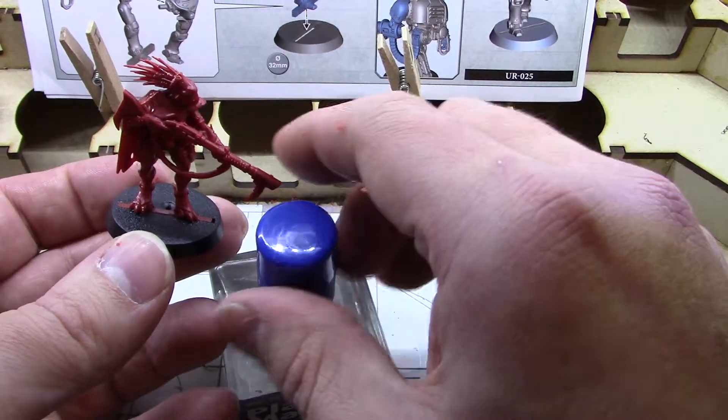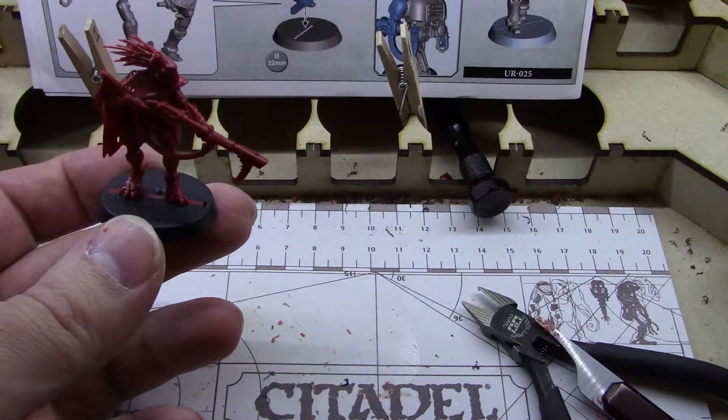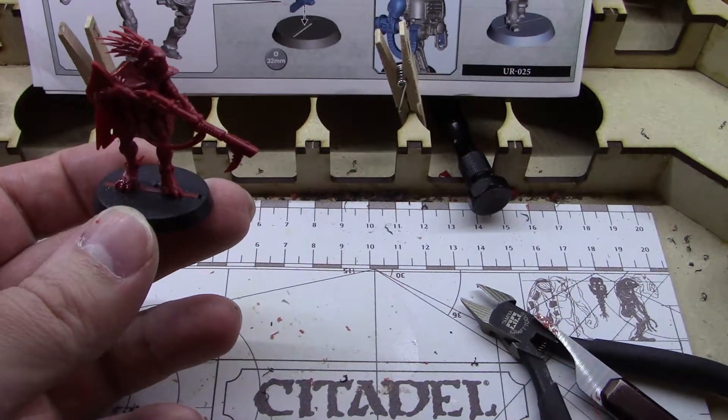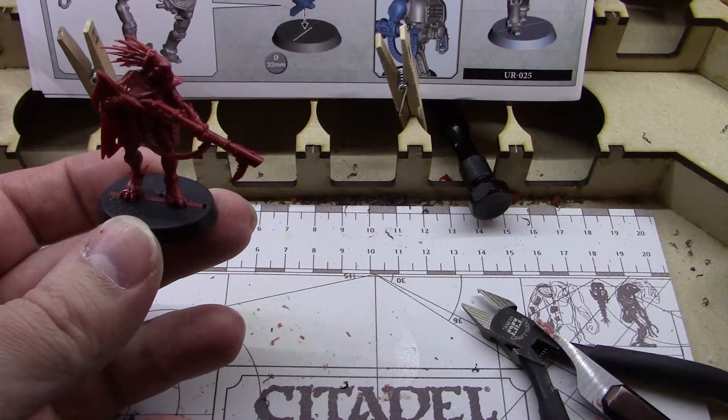And there it is. There's our Kroot Tracker for Blackstone Fortress. If you liked the video, click that like button. If you like the channel, subscribe. Until next time, for Crazy Gamer Games, I'm the Crazy Gamer. Have a wonderful day.